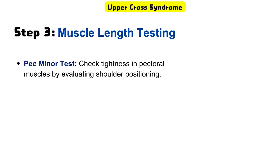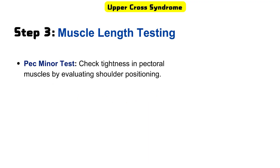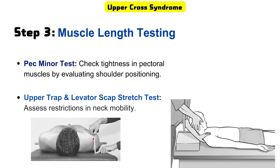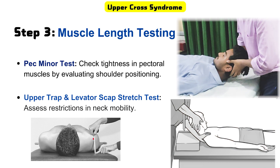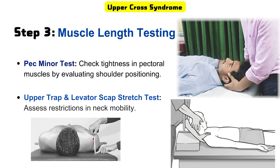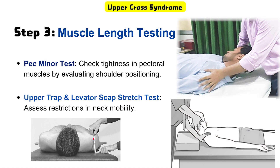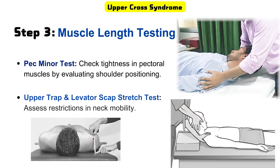Step three is muscle length testing. We perform two tests here. First is the pec minor test — check tightness in the pectoral muscles by evaluating shoulder positioning and measuring resting tension of the shoulder using the inch tape method. Second is the upper trap and levator scap stretch test — assess restrictions in neck mobility by performing neck flexion, side flexion, and same-side rotation while applying downward pressure to the shoulder.